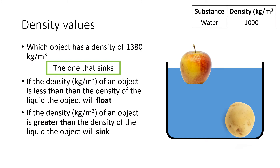Going back to the earlier example of the two objects, we have some data relating to one of the two objects. It gives us the number 1,380 kilograms per metre cubed. One of the objects has sunk and one is floating. The one that sinks is the one with the higher density — in this case the potato compared to the apple. More importantly, the potato has a higher density than the density of water, which causes it to sink. The density of the apple is less than the density of water, and therefore it will float.